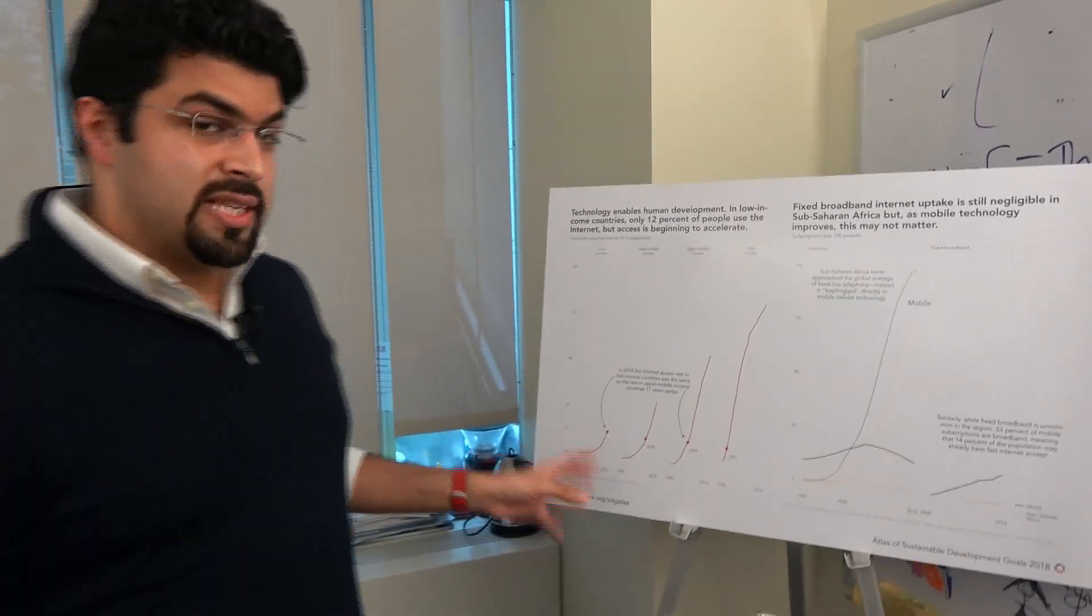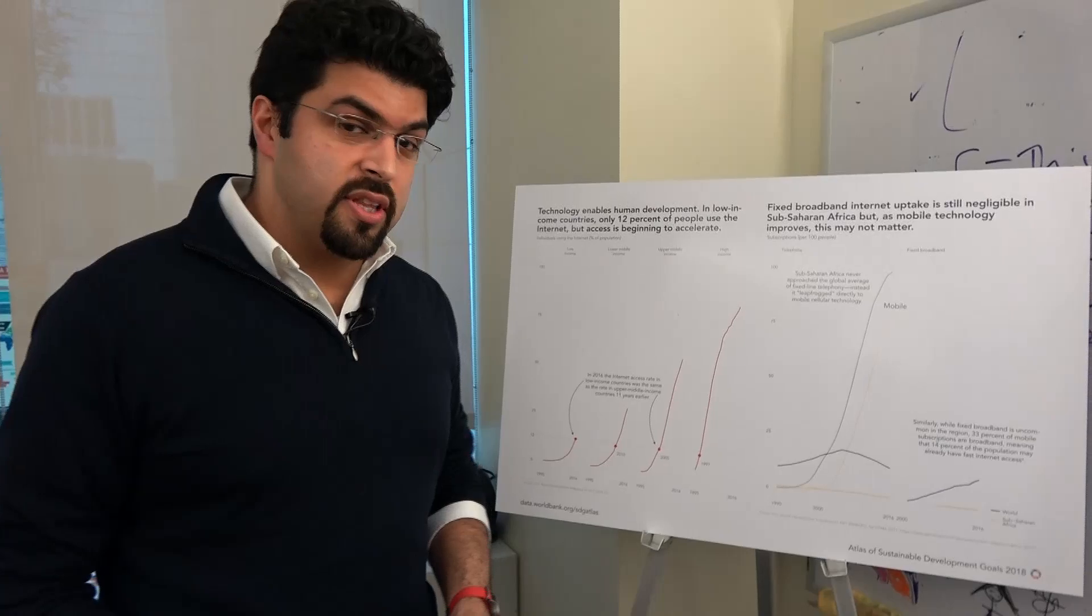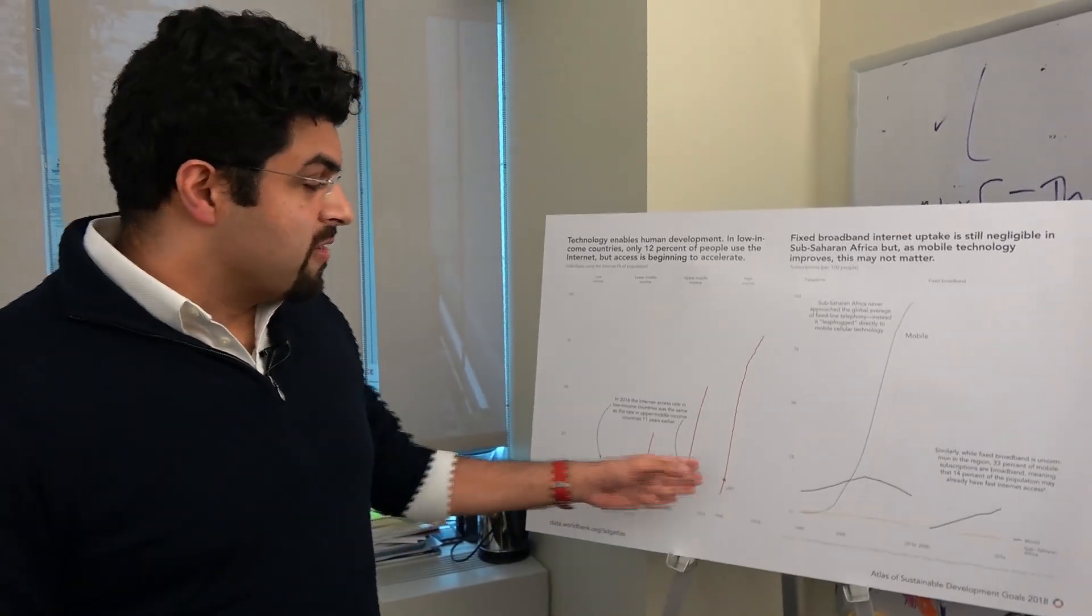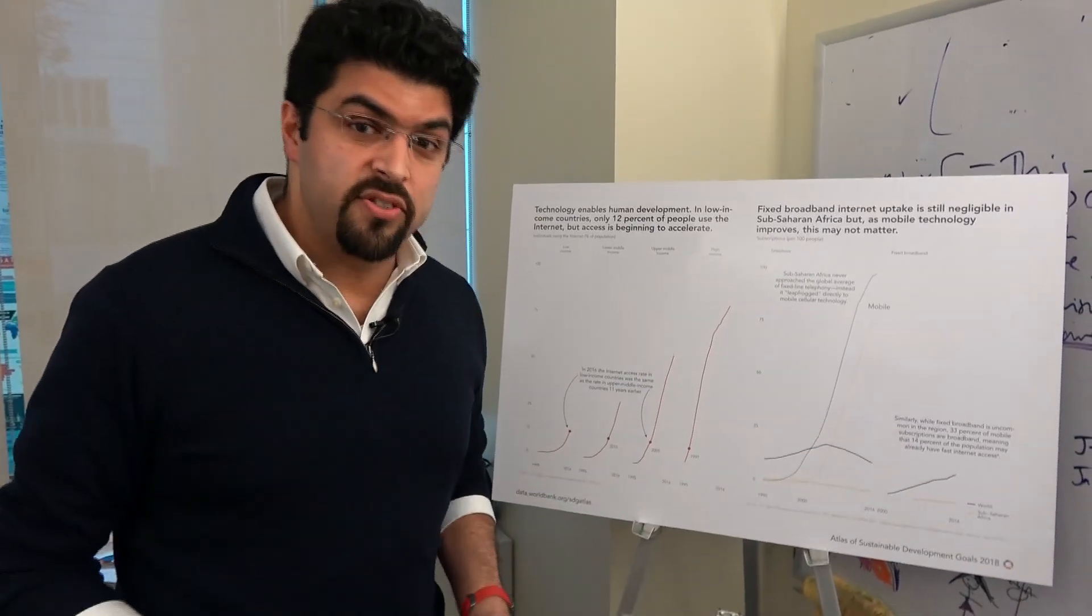So in low-income countries, something like 12% of people have access to the internet, which is roughly where internet access was 20 years ago in high-income countries like North America. But there's some good news.